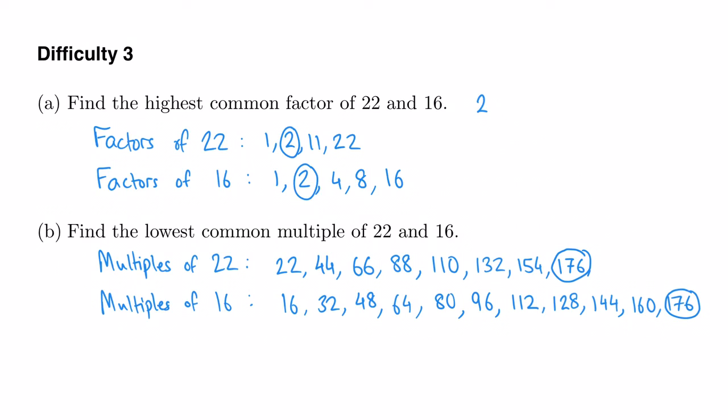And this is the smallest. There isn't a smaller number that happens to be in both of these lists at the same time. So the lowest common multiple of 22 and 16 is 176.